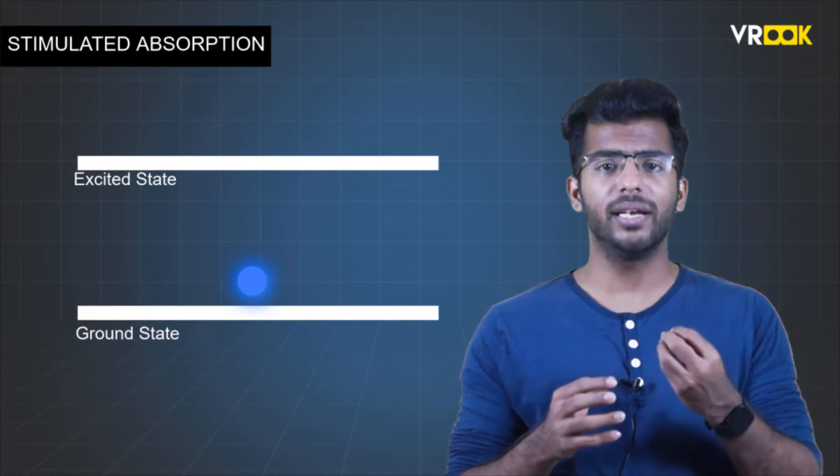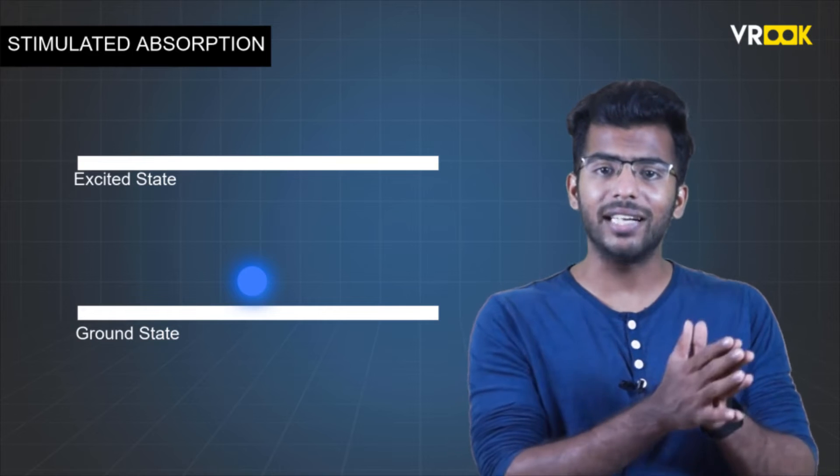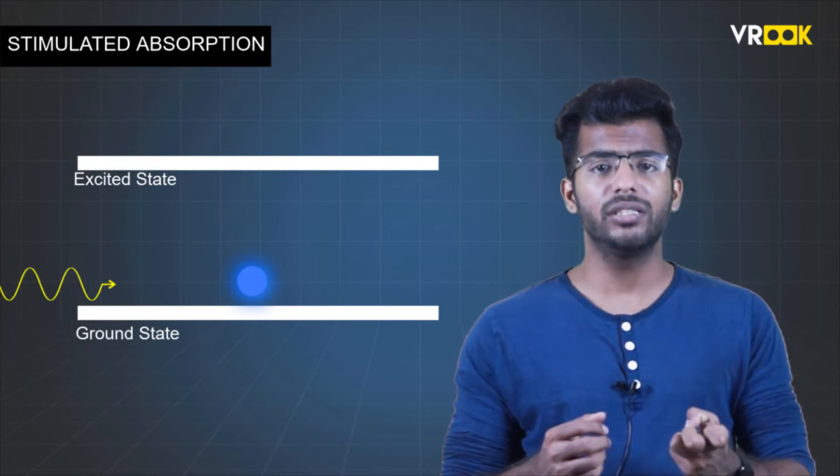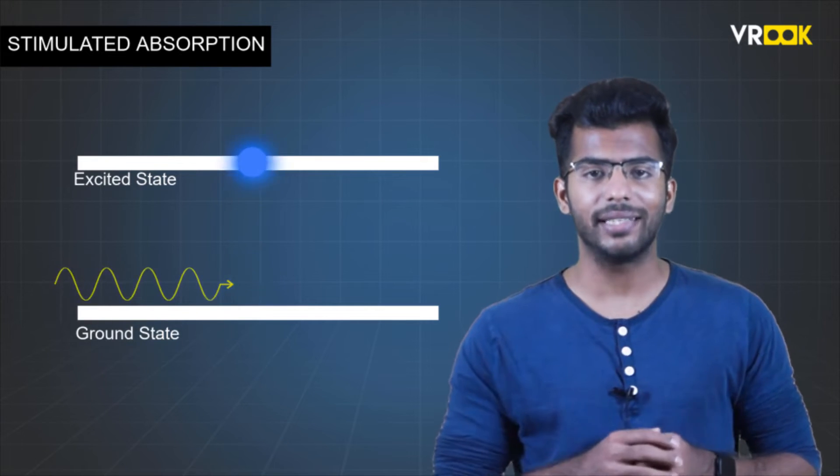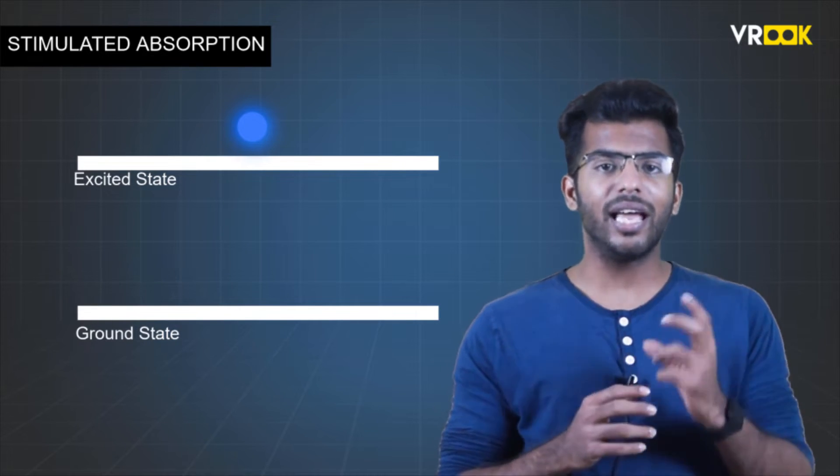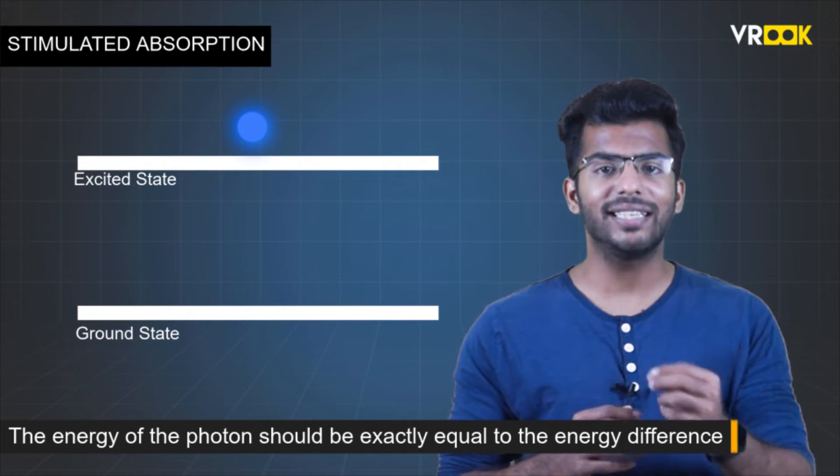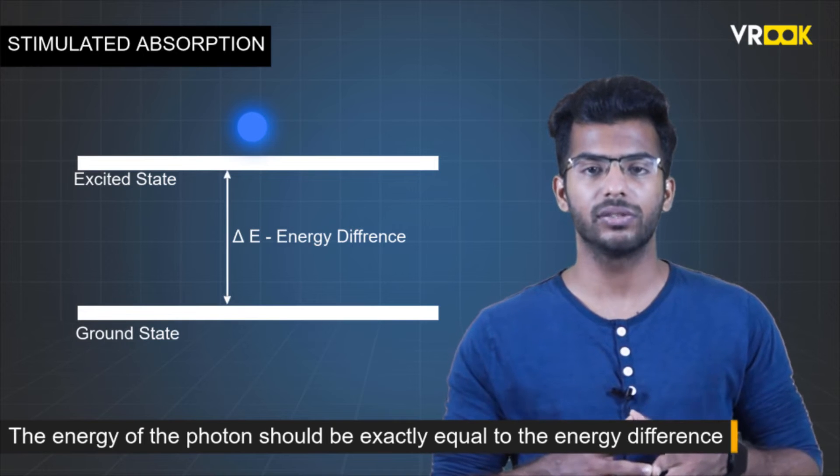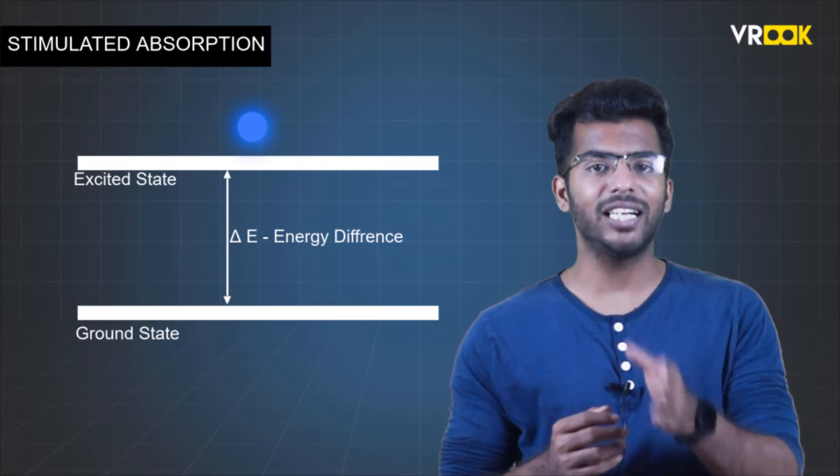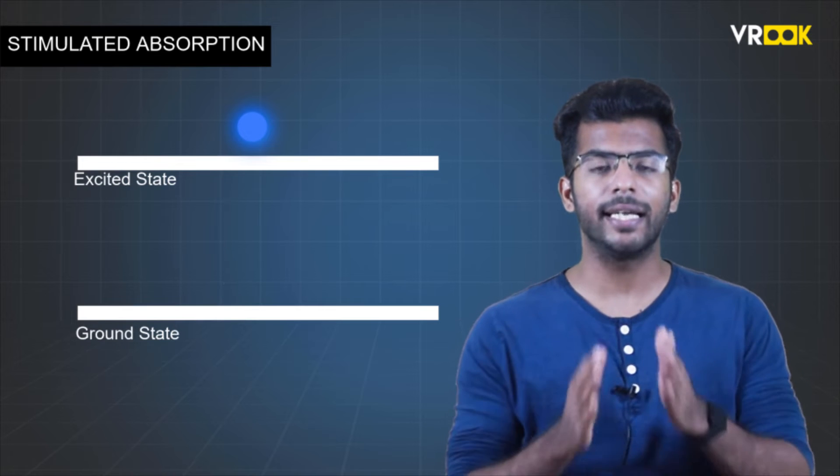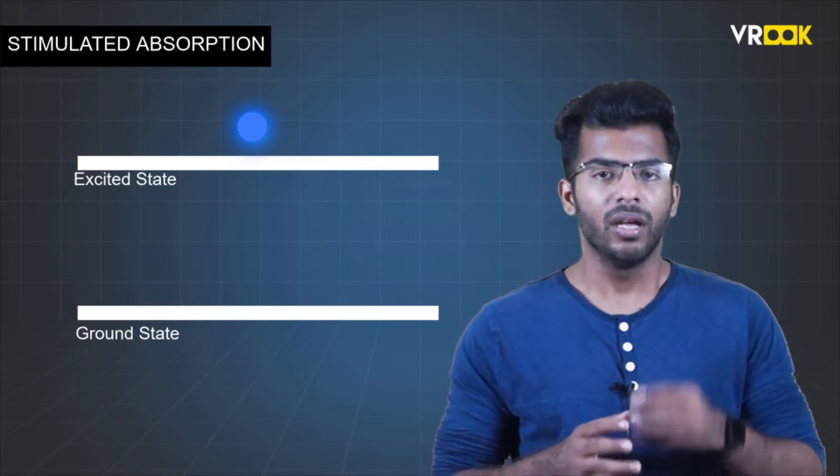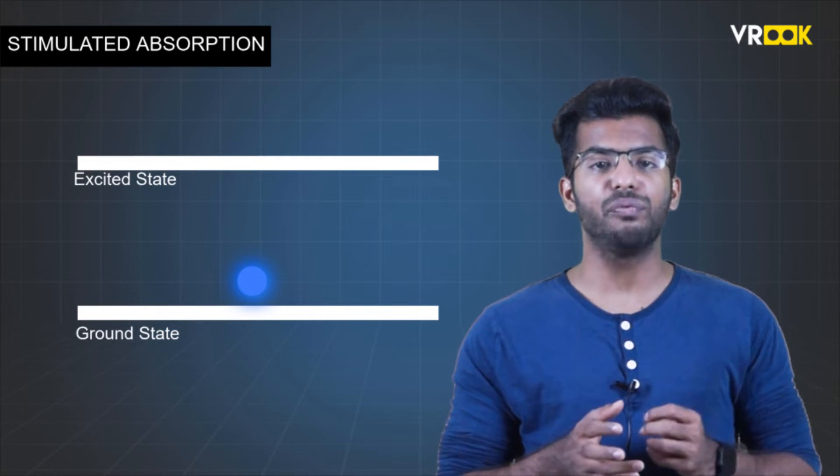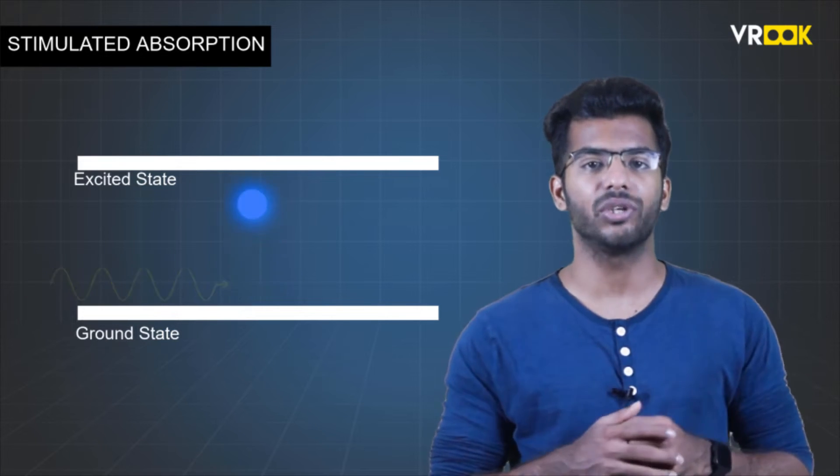If a single photon of some energy comes across an atom in lower energy state, the atom will absorb the energy from the photon and goes to the excited state. The energy of the photon should be exactly equal to the energy difference between the two energy levels. Anything less or anything more, the atom will not go to that particular energy state. This is the stimulated absorption.